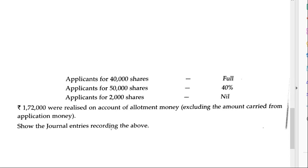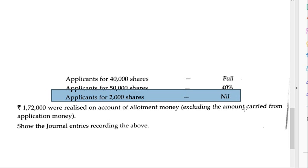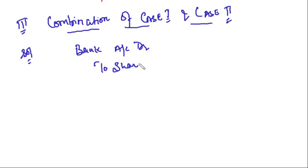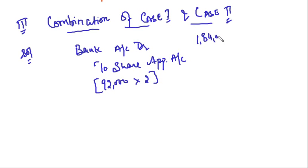Case 1 applies to the 2,000 rejected applicants. The very first journal entry is: Bank Account debit to Share Application Account — you received applications for 92,000 shares at rupees 2 per share, so you received rupees 1,84,000.